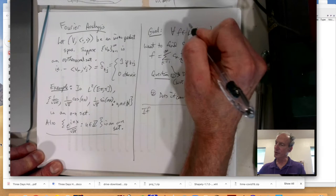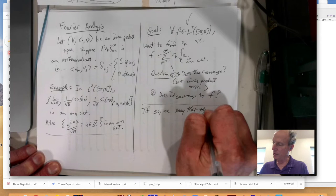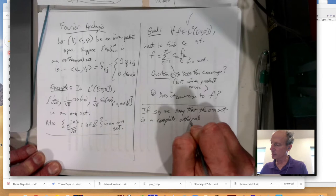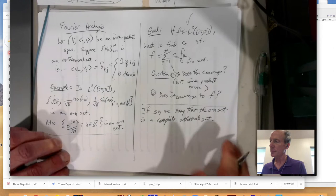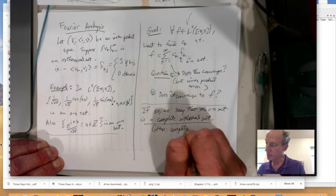So that's the question. And then if it does, if this is true, and this could be another vector space, by the way. It could be just a general vector space. If so, we say that the orthonormal set is a complete orthonormal set.